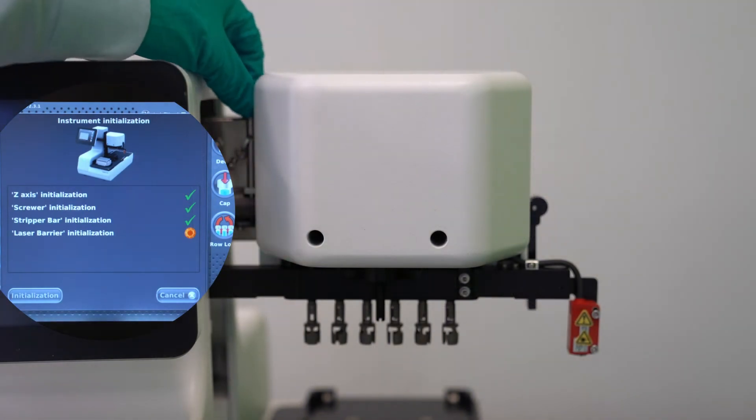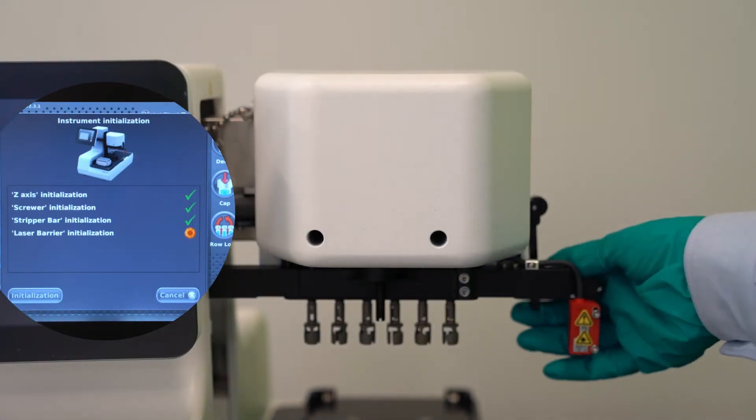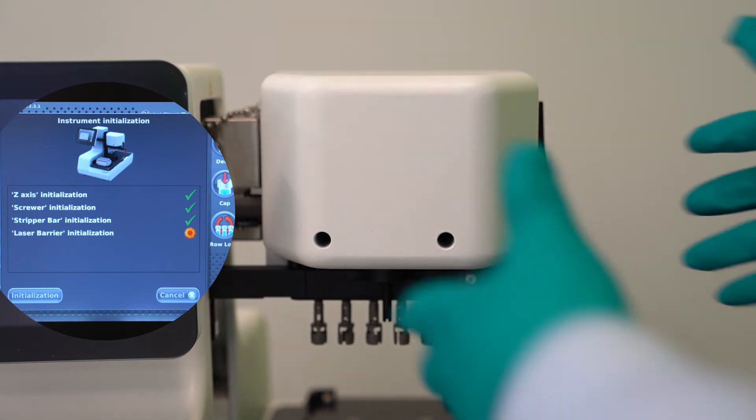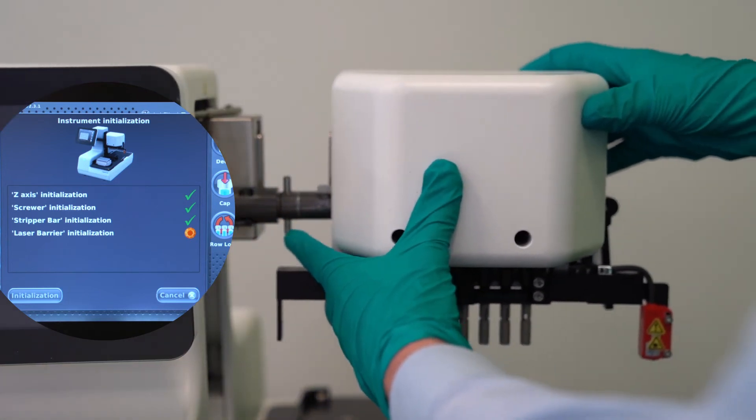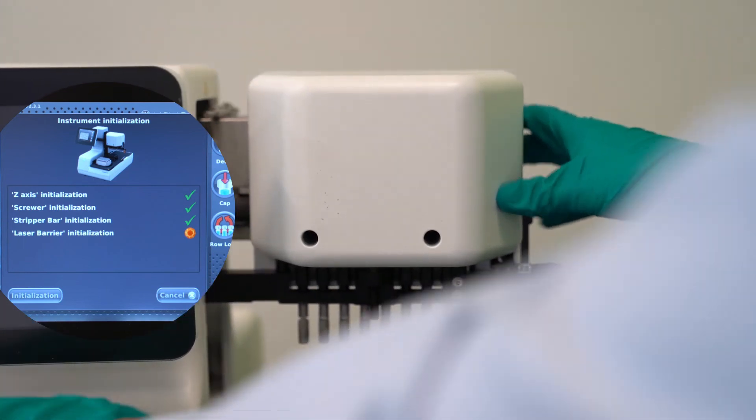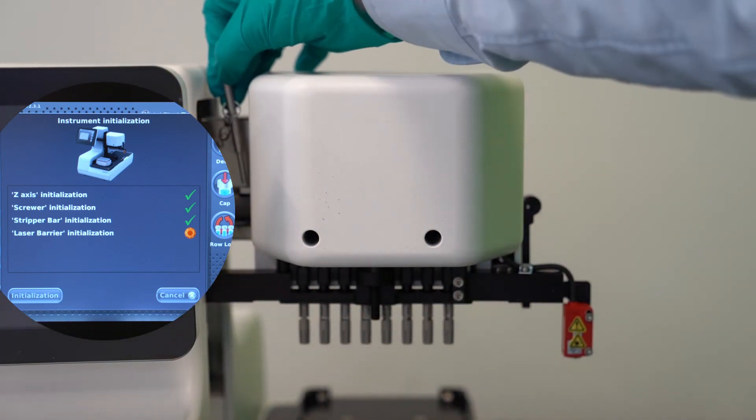Luckily, this is a quick process. With the machine off, simply pull the pin, lift the lever and replace it with the 8-channel head. Then, turn the machine on. While that initializes, we will move on.